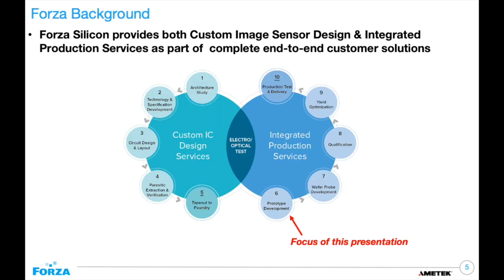Here's a Venn diagram about all the services we provide here at Forza. We're a turnkey solution for CMOS image sensor design — you can come to us with the concept and we will help you build the specifications, then work on the design all the way to tape-out, which is steps one through five. Once the design has been taped out, we'll get real silicon to test, and these slides will focus on step six, which is prototype development, followed by activities seven through ten.